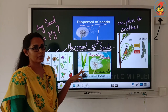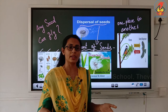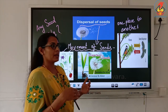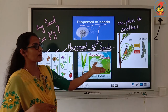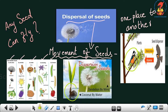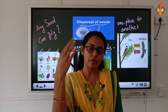Seeds are not actually having wings, but they are still moving because of certain reasons — by wind, by animals, by birds, by humans, and also by water. Like the coconut — it always moves from one place to another through water.